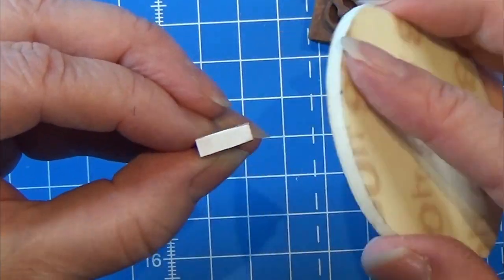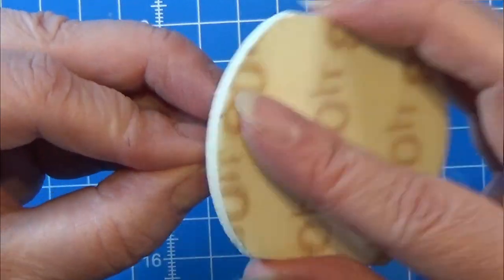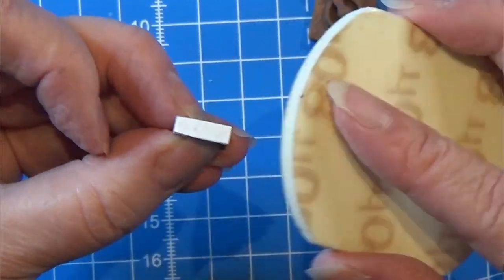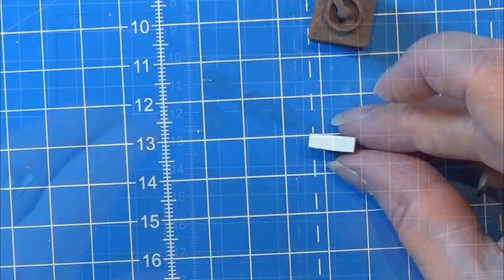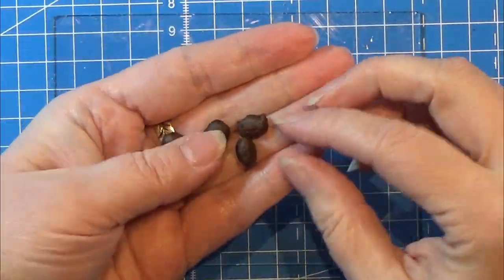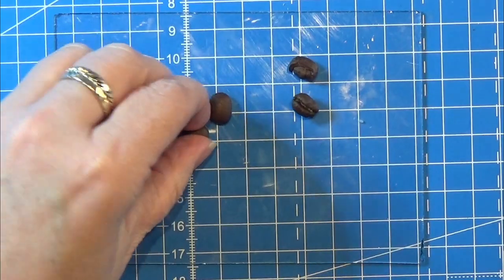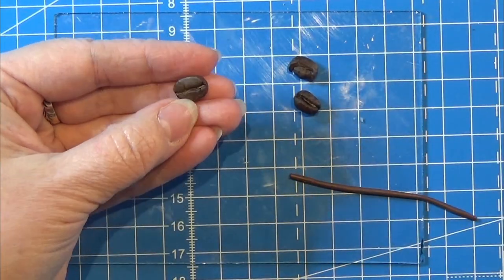I sanded the edges of the paper a tiny bit to make it a little more smooth, and then of course I painted this little drawer again. I wanted to make some coffee beans.